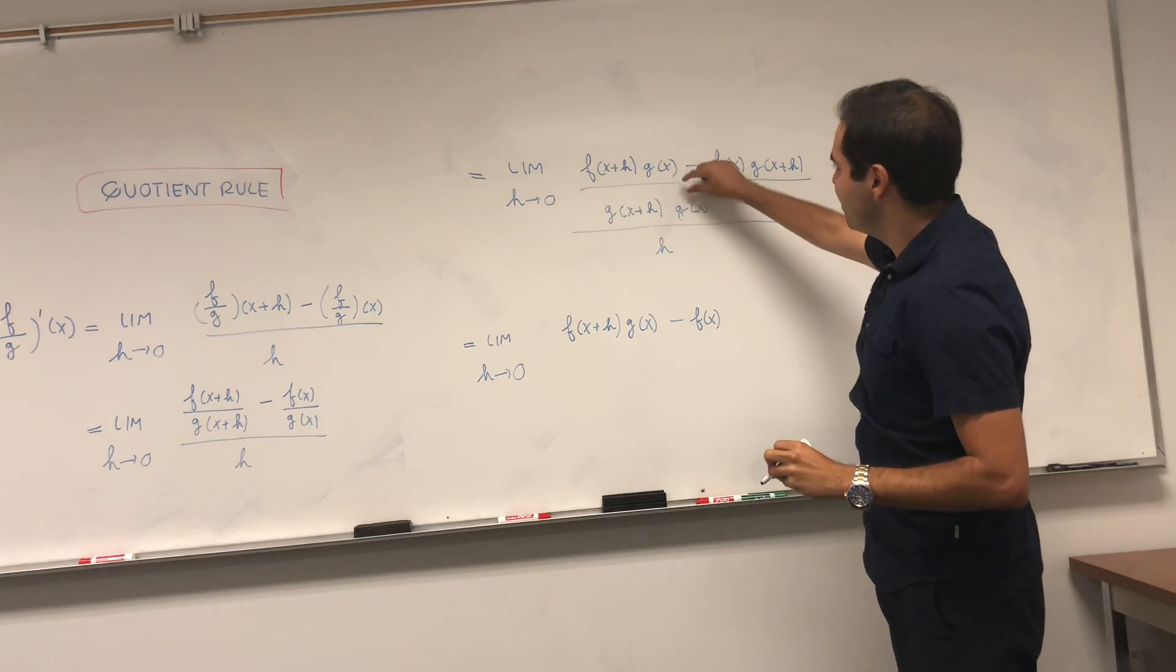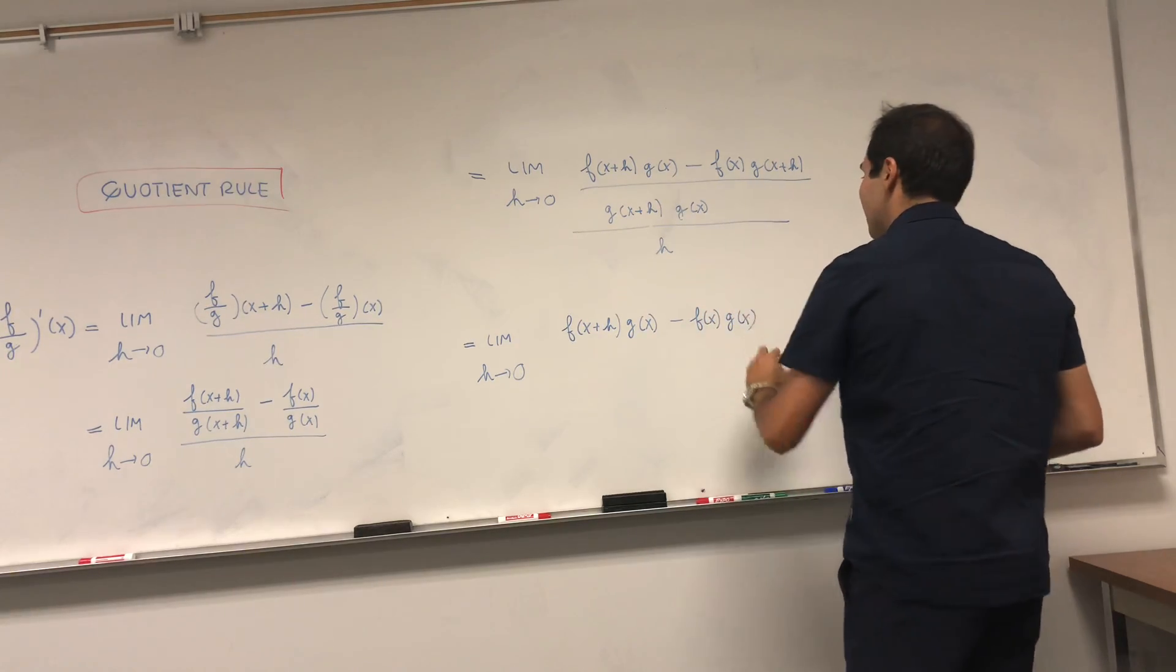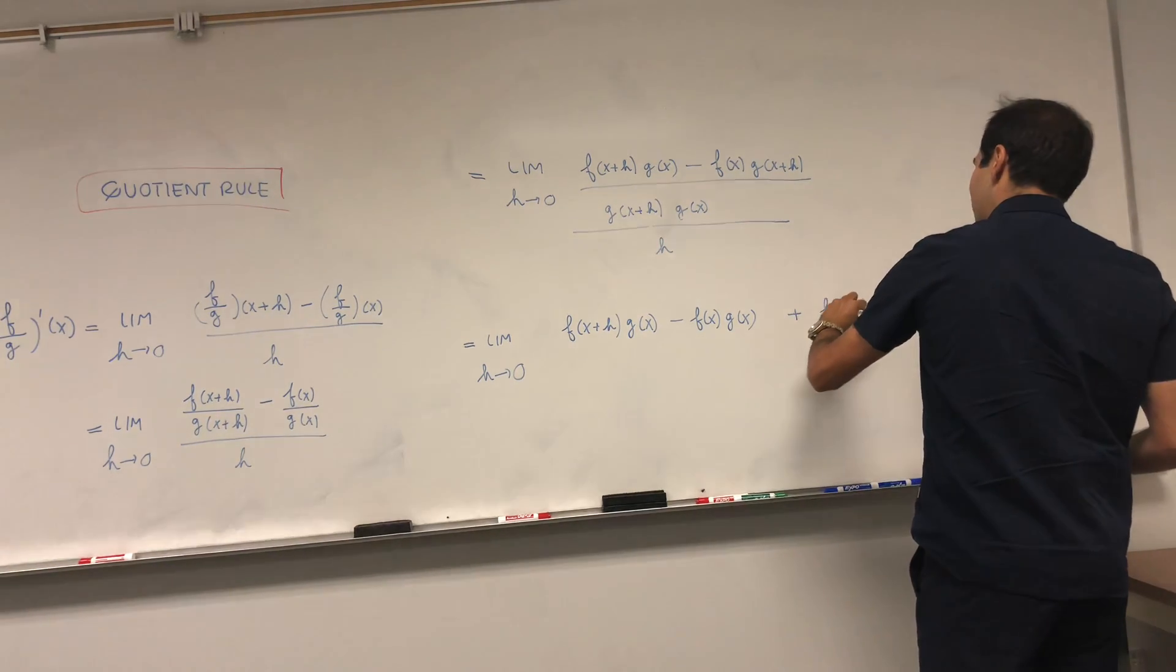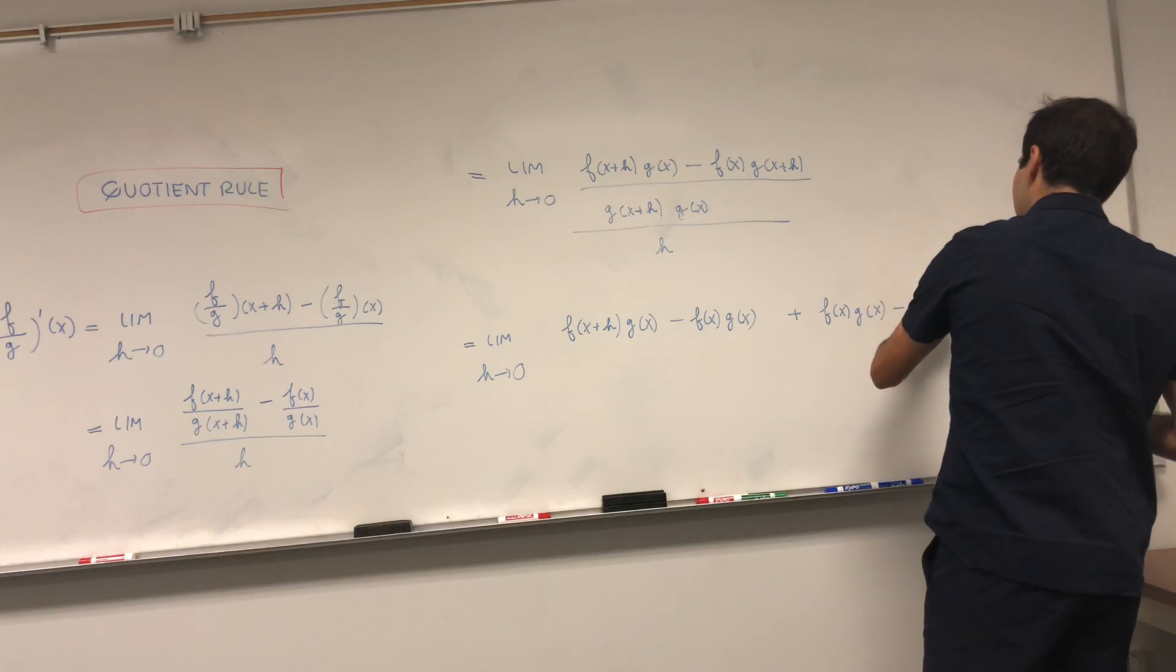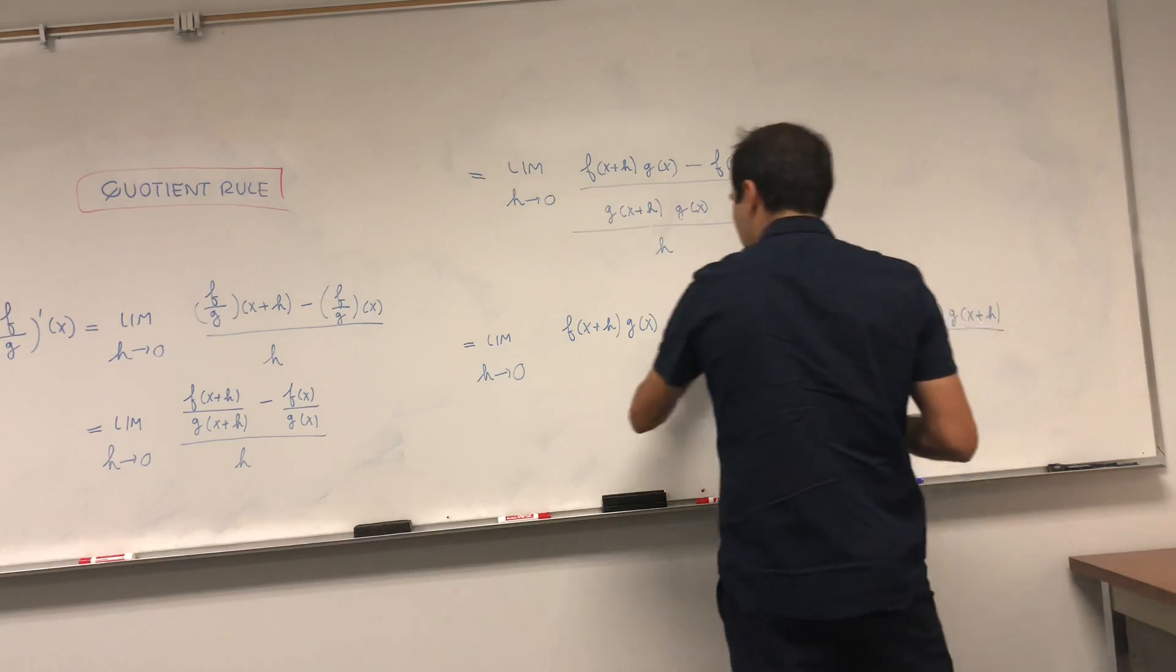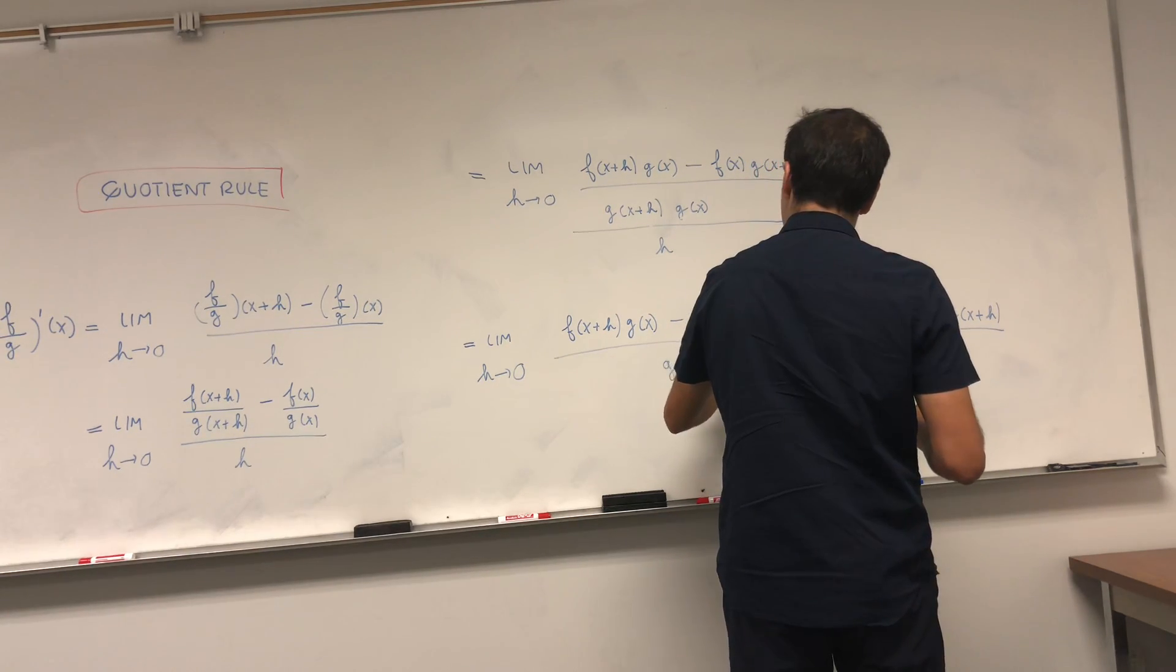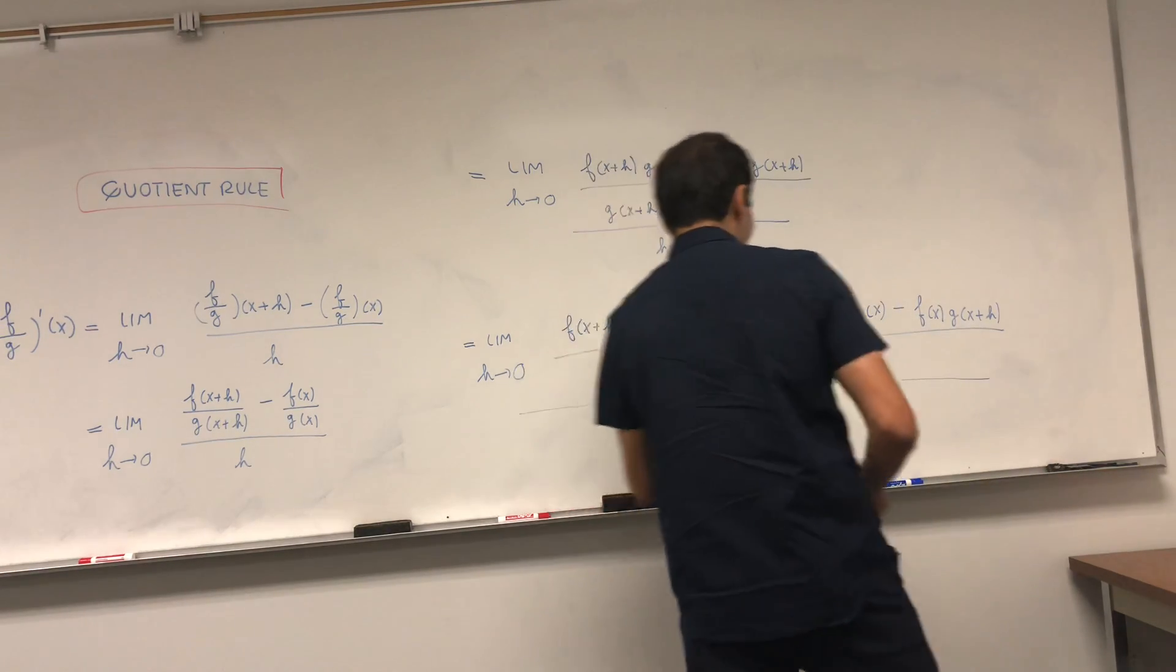But to make this also be divided by g of x, let's multiply this by g of x. And whatever you subtracted, you have to add back. So it's plus f of x g of x and minus that term, minus f of x g of x plus h. And all that divided by g of x plus h times g of x, and all that divided by h. So it's a huge fraction.